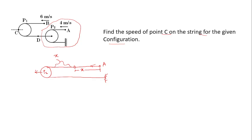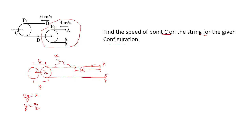Now I will have to pull P2 by some distance to compensate for this extra length and make the string tight again. Let's say we shift P2 by y. Then y here and y here — so 2y is compensated. Since we needed to compensate x, we get y = x/2. So if A moves by x, P2 moves by x/2.